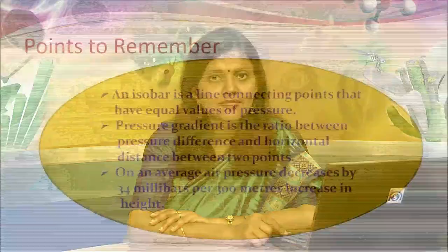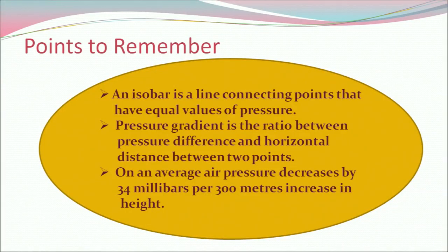Now let's do a quick recap. An isobar is a line connecting points that have equal values of pressure. Pressure gradient is the ratio between the pressure difference and horizontal distance between two points. On average, air pressure decreases by 34 millibars per 300 meters increase in height.